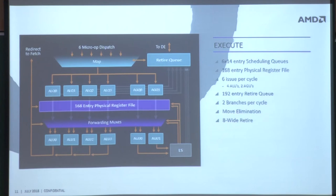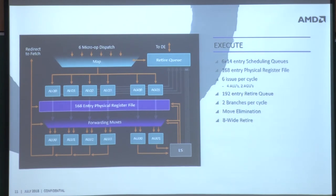We dispatch 6 but do 8-wide retire. Through simulation and modeling we found that is the optimum because although instructions get executed, we often can't retire them because an older instruction hasn't completed yet — maybe it has a cache miss. So the younger executed instructions pile up in the retire queue. That's why we allow 8 instructions to retire in the same cycle, even though we're dispatching 6.